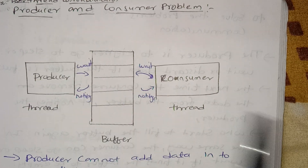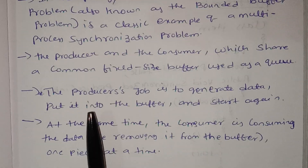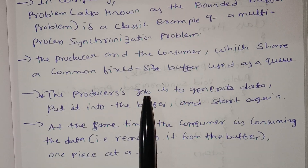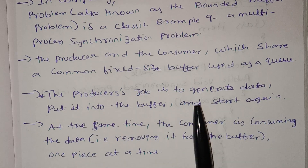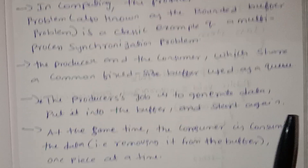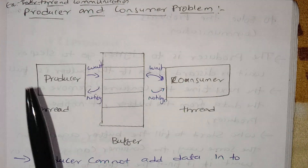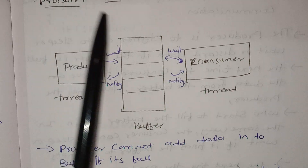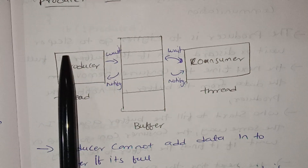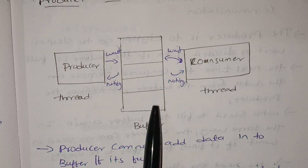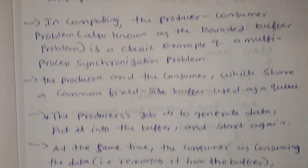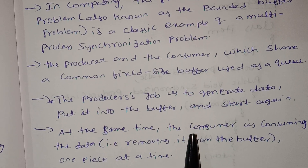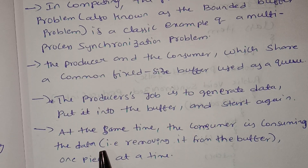The buffer is based on a queue which is used by both the producer and the consumer. The producer's job is to generate data, put it into the buffer, and start again.